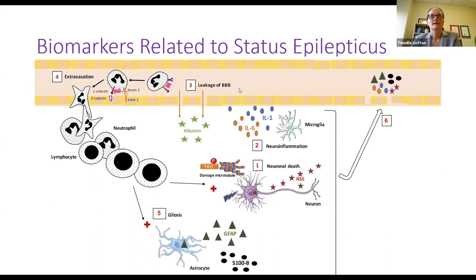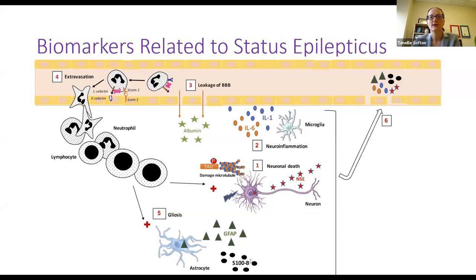There's increasing interest in biomarkers to help with both treatment targets and prognostication. For neuronal cell death, we have neuron-specific enolase and tau measured in CSF. For neuroinflammation, we can measure cytokines such as interleukin-1 and -6, and microglia. For blood-brain barrier leakage, we can compare the ratio of albumin in CSF compared to blood. We can also see gliosis, which we can measure with GFAP and S100B, and other processes measurable through serum biomarkers.